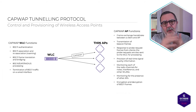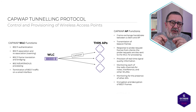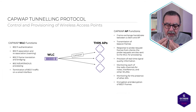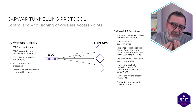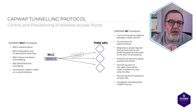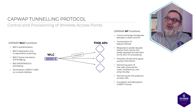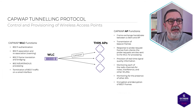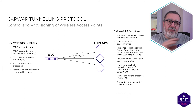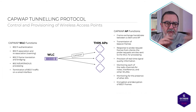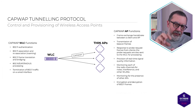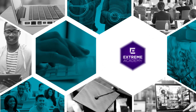Other functions include response to probe request frames from clients, and provision of real-time signal quality information. CAPWAP will have information about the quality of the client-to-AP connection, which is fantastic because that can be fed back into a system like Extreme Cloud IQ. CAPWAP also handles monitoring each of the radio channels for noise and interference, and monitoring for the presence of other access points.